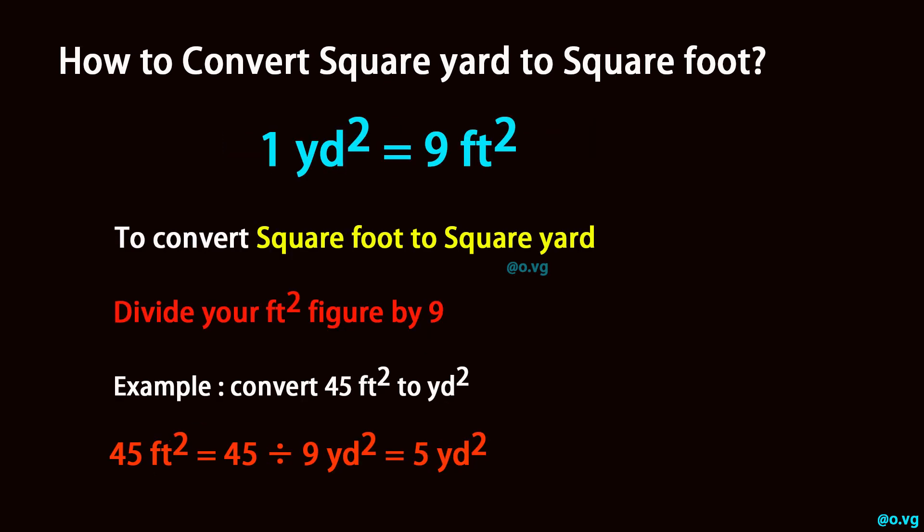To convert square foot to square yard, divide your square foot figure by nine. Example: convert 45 square feet to square yards. Forty-five square feet equals 45 divided by nine square yards, which equals five square yards.